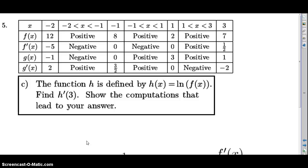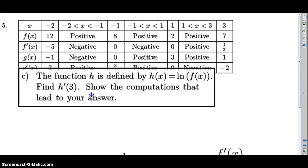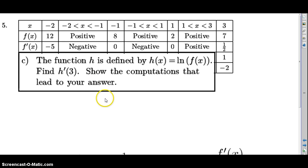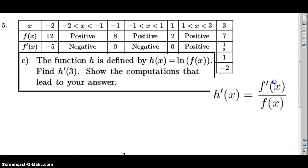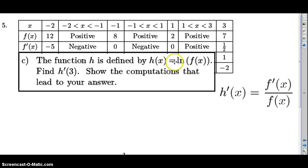Part C: Function h is defined by h of x equals the natural log of f of x. Find h prime of three and show the computations. So h is the natural log of f. Since this is a composite function, the derivative of h is the derivative of the argument of the natural log, which is f prime of x, divided by the argument, which is f of x. So h prime of x equals f prime of x divided by f of x.